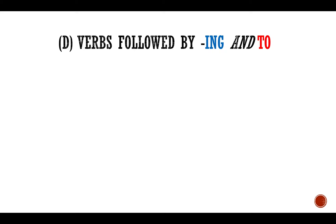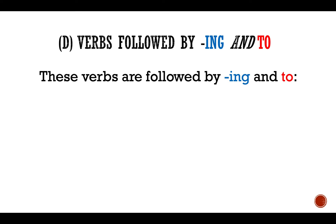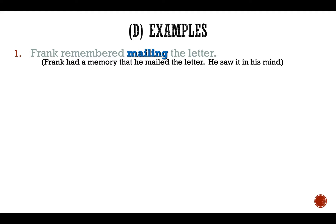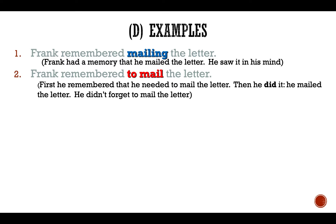Now, verbs followed by ING verbs or full infinitive verbs. These verbs — for example, remember, stop, forget, etc. — can be followed by both, but the meaning changes depending on which form is used, so pay close attention. Number one: 'Frank remembered mailing the letter' means Frank had a memory that he mailed the letter — he saw it in his mind. Instead, 'Frank remembered to mail the letter' means he first remembered that he needed to mail it, then he did it — he didn't forget.